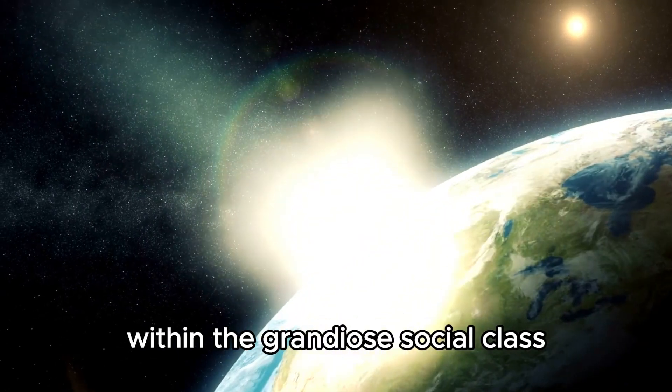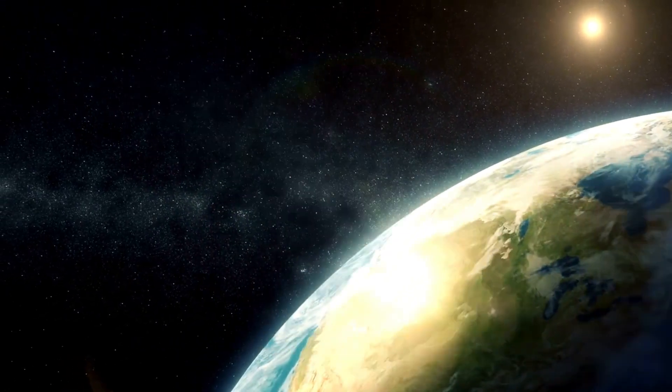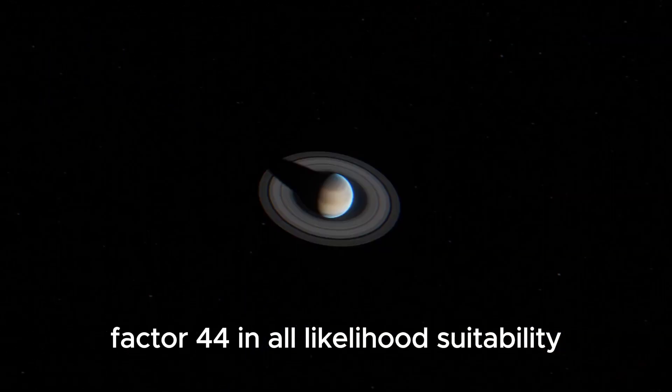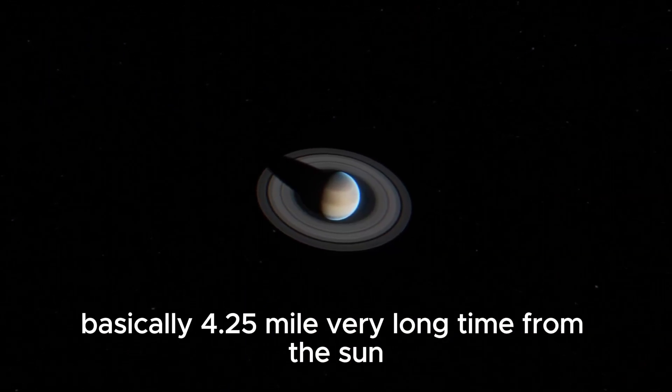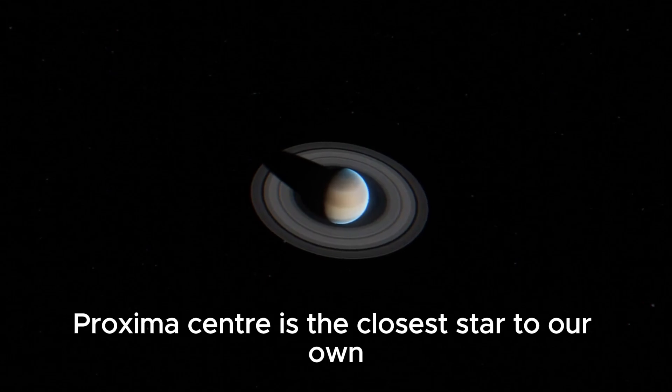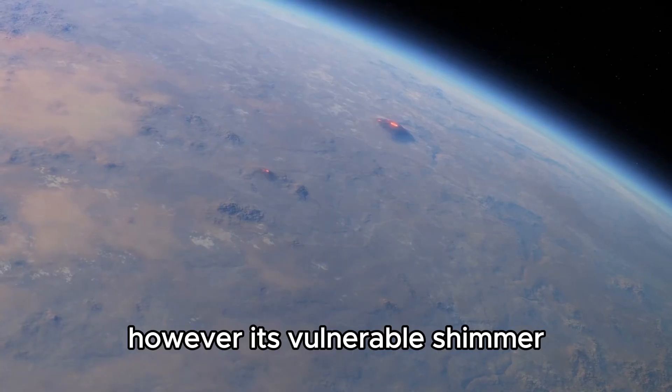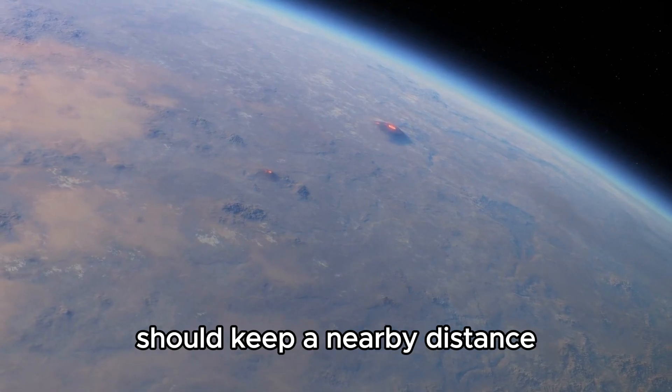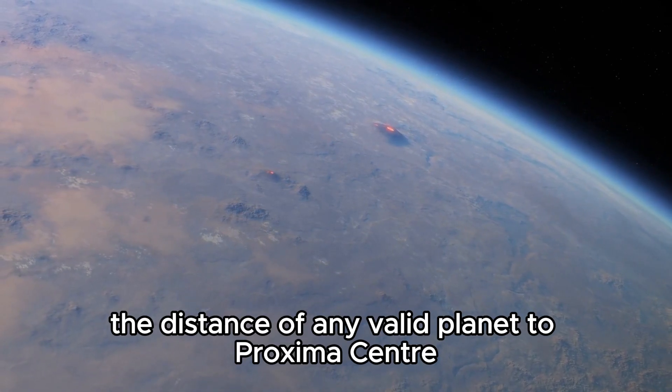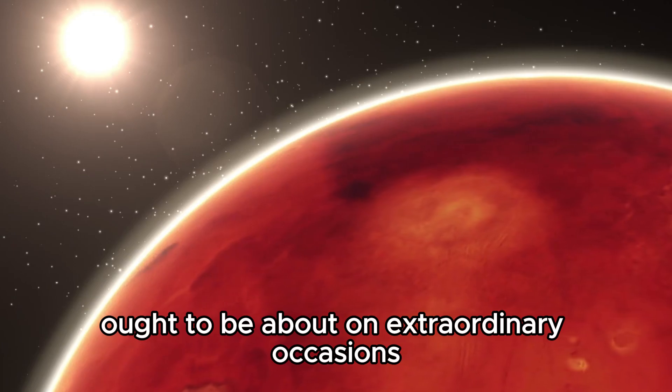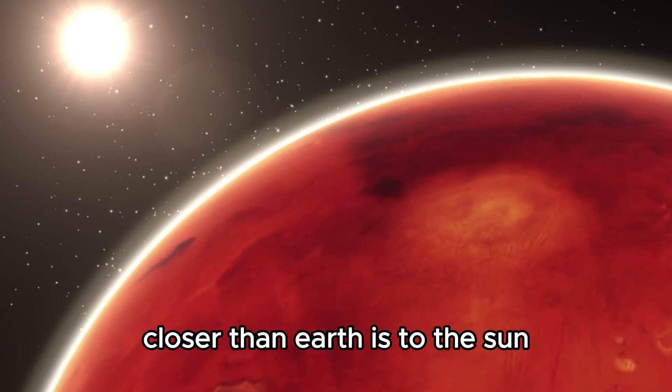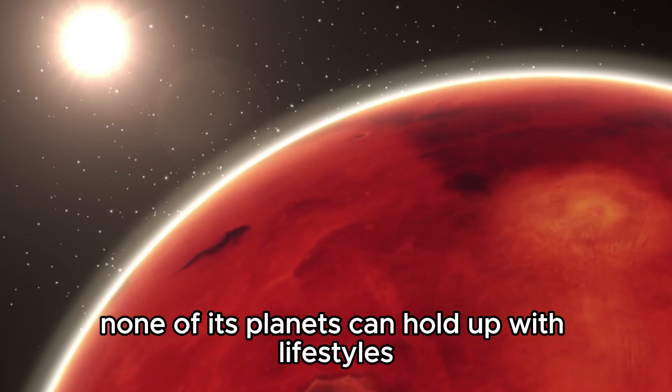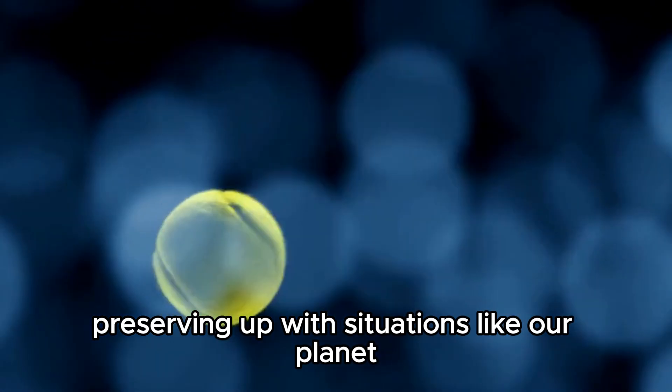Among the extraordinary stars in the cosmos, Proxima Centauri stands as a point of reference. Regarding suitability, at just 4.25 light years from the sun, Proxima Centauri is the closest star to our own. However, its feeble shimmer shows that any planet circling it should keep a close distance. The distance of any valid planet to Proxima Centauri ought to be about ten times closer than Earth is to the sun. Without meeting this condition, none of its planets can maintain life-sustaining situations like our planet.